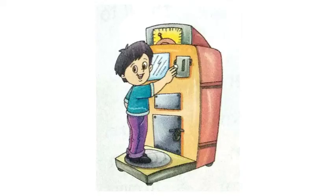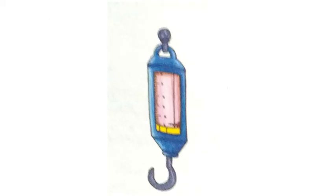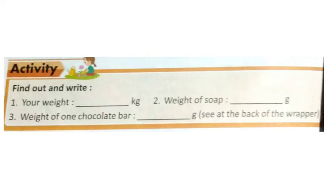Here is a weighing machine — with the help of this, you can measure your own weight. Here is a physical balance, which you will see at shops. This is a spring balance. This is a digital balance, which we can see everywhere nowadays. For your activity, find out and write down your weight, the weight of a soap bar from your home, and the weight of a chocolate bar by checking its wrapper.